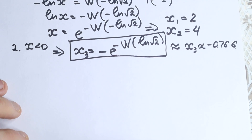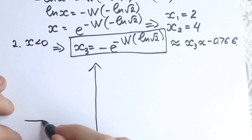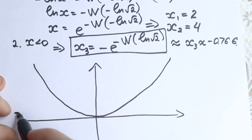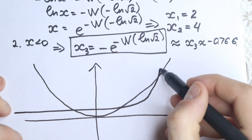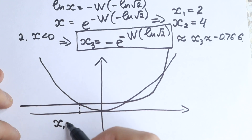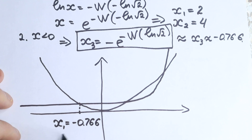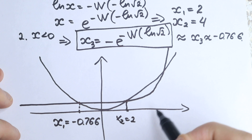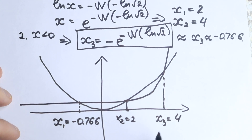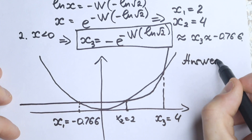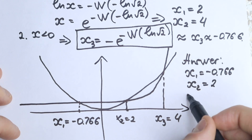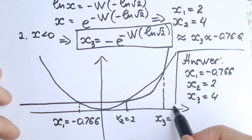Now let's draw the graph: we have our parabola x squared and our exponential function, and as you can see there are three points of intersection. The first point is x₁ equals minus 0.766, then x₂ equals 2, and the third point is x₃ equals 4. So we have three solutions to this equation: x₁ ≈ -0.766, x₂ = 2, x₃ = 4.